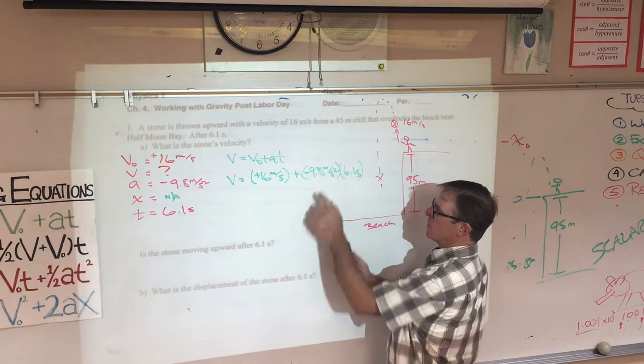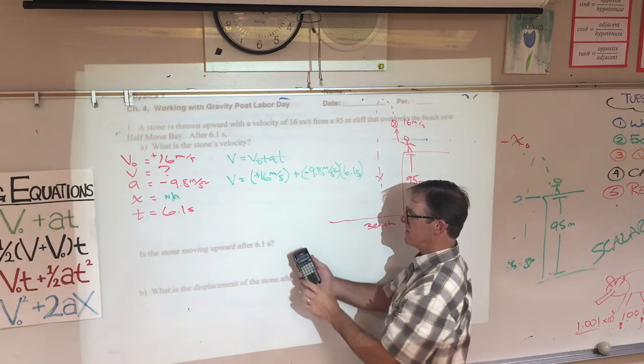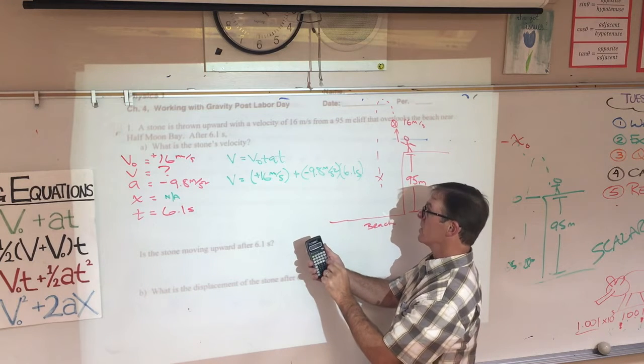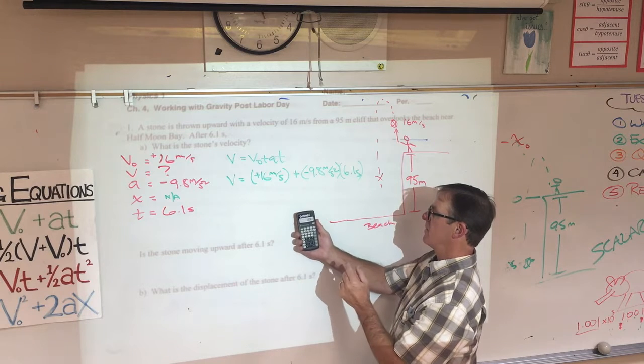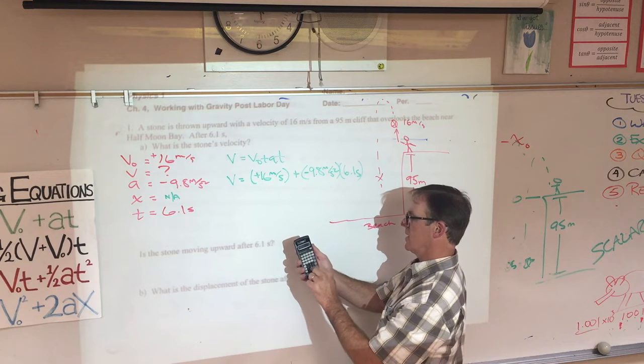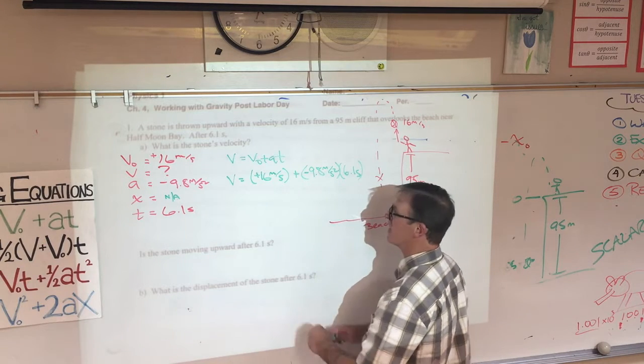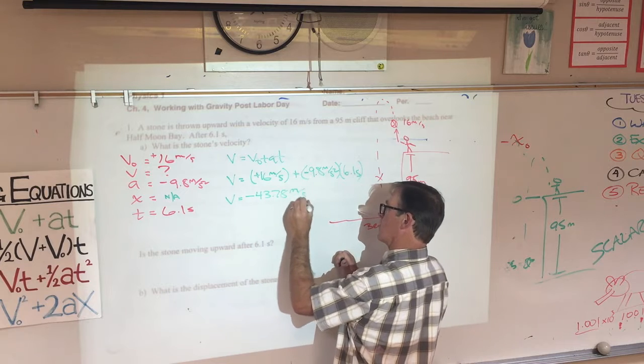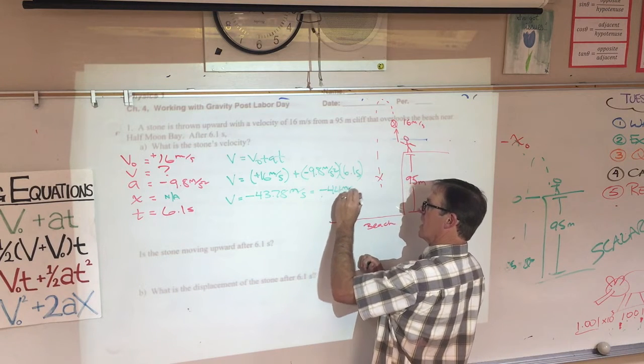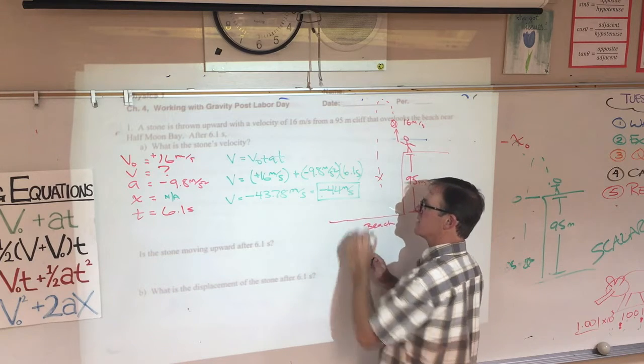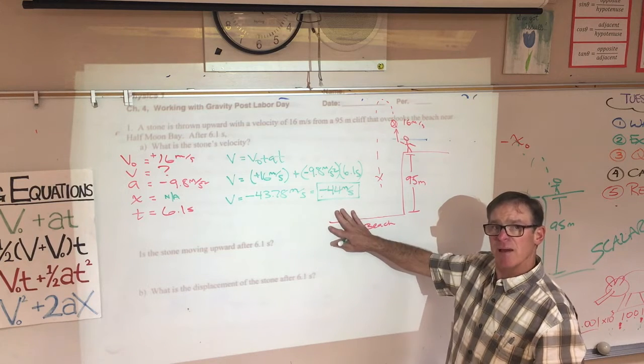Reminding you that if you're using a primitive calculator like I am, it's best to do this part first, then add 16 to it. 9.8 negative times 6.1 is negative 59.78 plus 16. And my final answer is negative 43.78. Let's round that off to negative 44. The final velocity after 6.1 seconds is negative 44 meters per second. Make sure that you can do that without me.